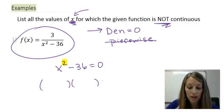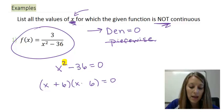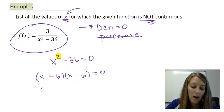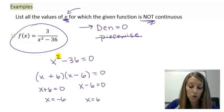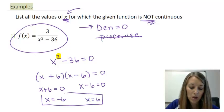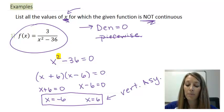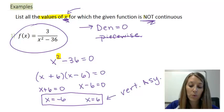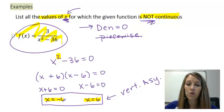I'll solve it using the factoring method. x times x gives me x squared, 6 times 6 gives me 36, and by difference of squares, one gives me positive and one gives me negative. Setting each factor equal to zero: the first gives me negative 6, and the second gives me positive 6. Degree two yields two answers. These are creating vertical asymptotes on my graph, which makes the graph not continuous there. So listing all values of x where it is not continuous: x equals negative 6 and positive 6.